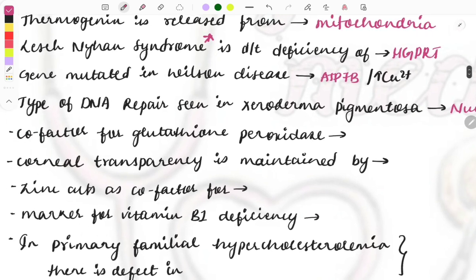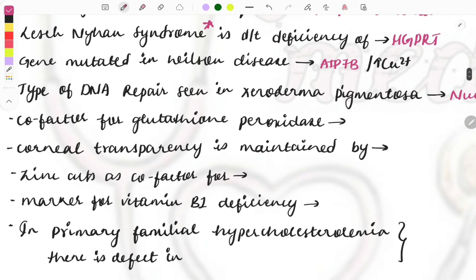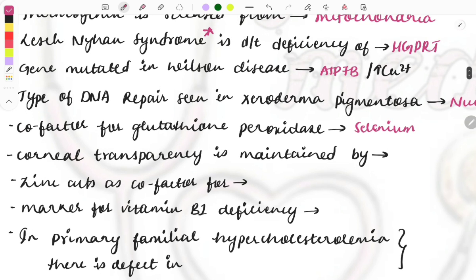Cofactor for the glutathione peroxidase enzyme. The cofactor for this one is selenium. Selenium acts as a cofactor, that means it will increase supportive, like it gives support to this glutathione peroxidase to show its action.